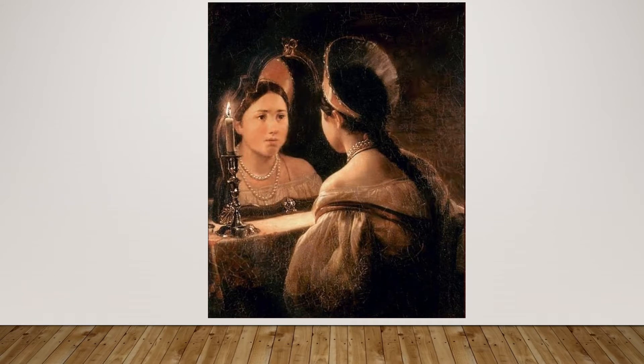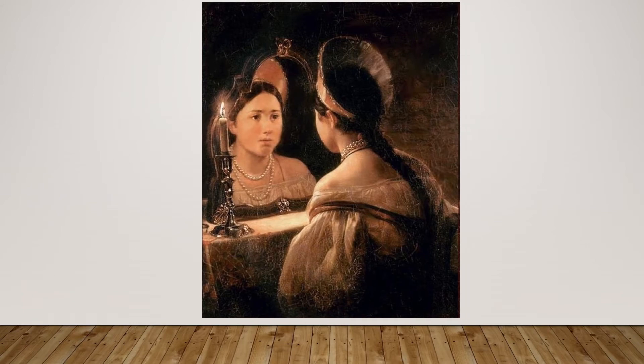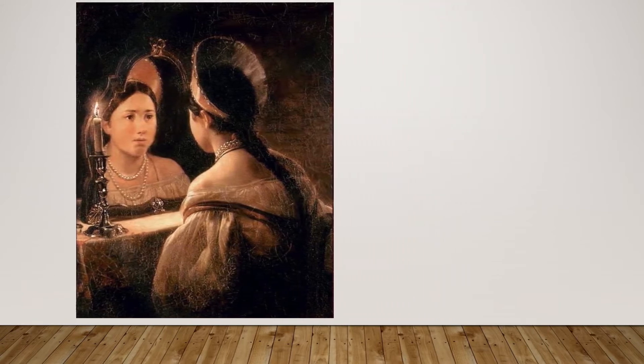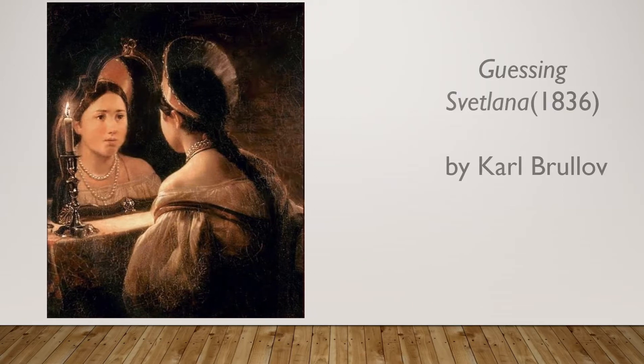Light can also be used to show reflections. Here artist Brulov uses a mirror to show a fortune teller looking at her reflection. This allows us to see the girl from two different angles.